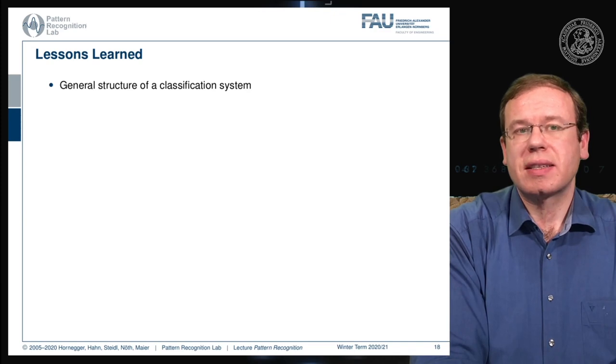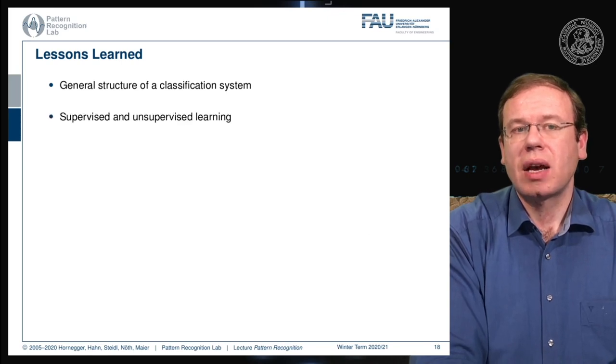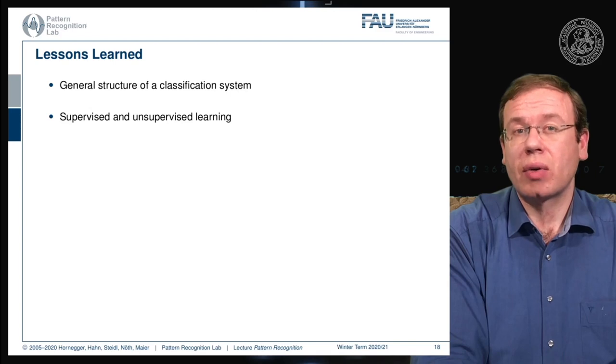So what are the lessons that we learned so far? We looked at the general structure of a classification system. We looked into supervised and unsupervised training so we can also do training with only the observations without any labels.